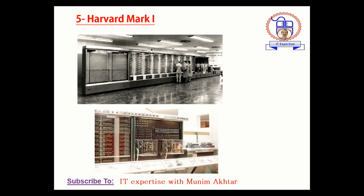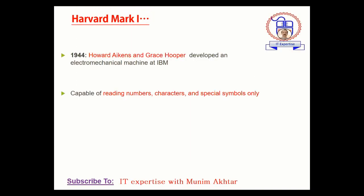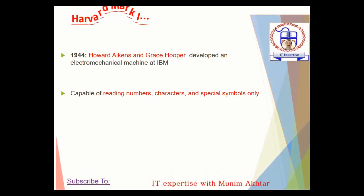The fifth device is the Howard Mark 1. This is a picture of the Howard Mark 1 — it normally takes up a large space to reside on a surface. This was in 1944 when Howard Aiken and IBM developed it. It was capable of reading numbers, characters and special numbers only.